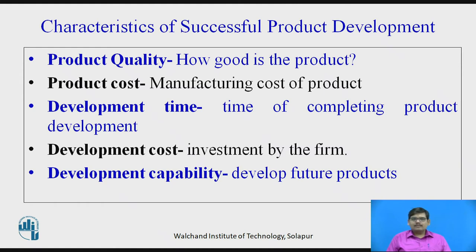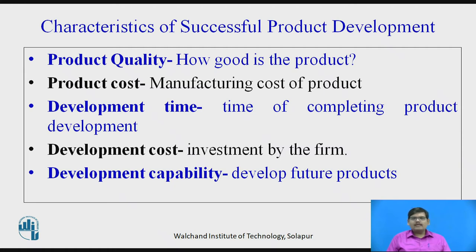Development capability: Is the firm capable of developing the current product using its available resources, skilled labor, and technical machines? Is the firm able to develop a new product based on its current setup and manpower? This needs to be considered for successful product development. If the product fails or needs modifications, the firm should be able to do it with available resources. So product quality, product cost, development time, development cost, and development capability are the characteristics that define successful product development.